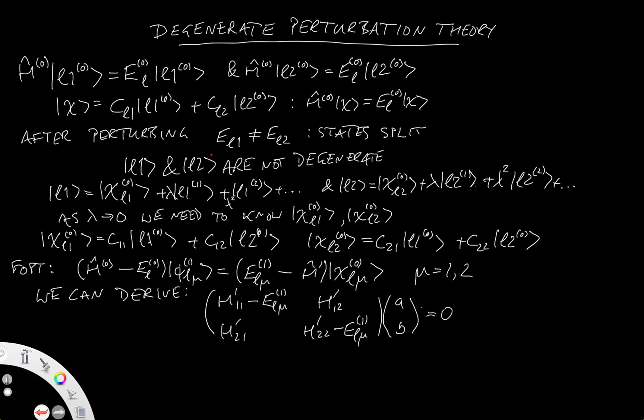You can derive that by substituting into that first order perturbation theory and contracting with the L1 and L2. And we define H prime AB. Oh, that's actually, AB is a bad choice. Let's say H prime, let's say N M is equal to N, no, it's equal to L_N L_M.